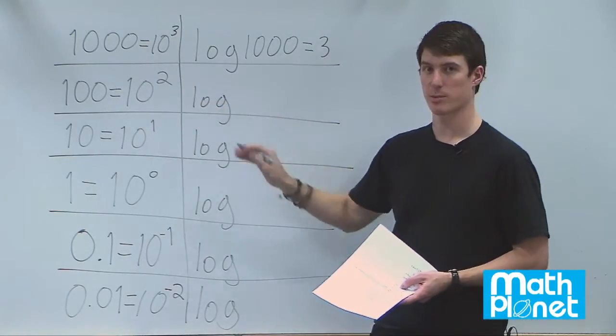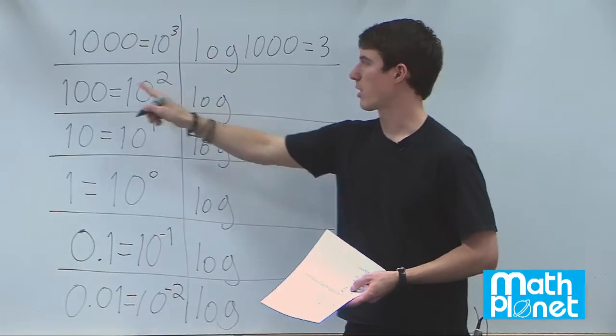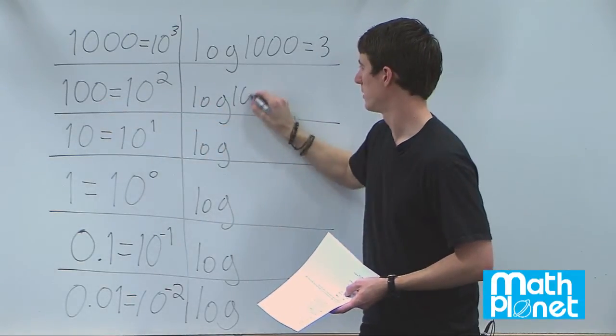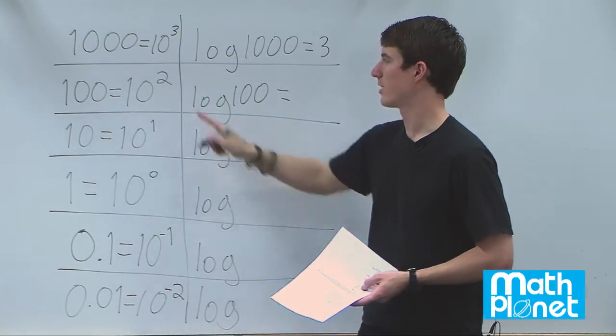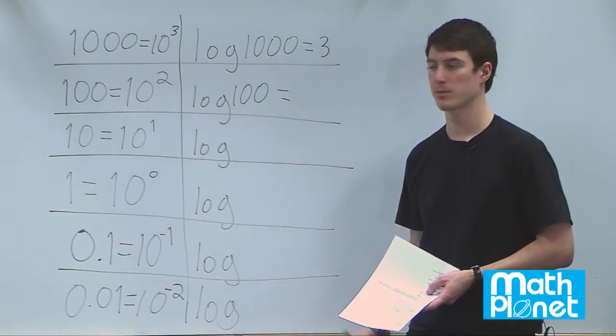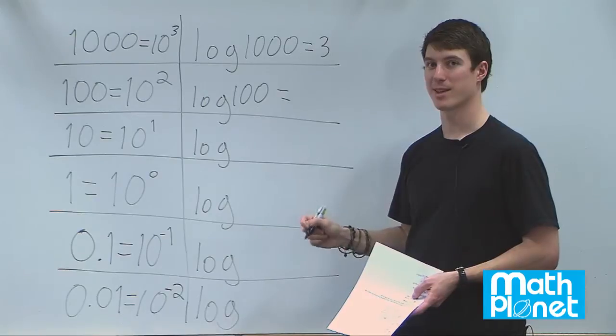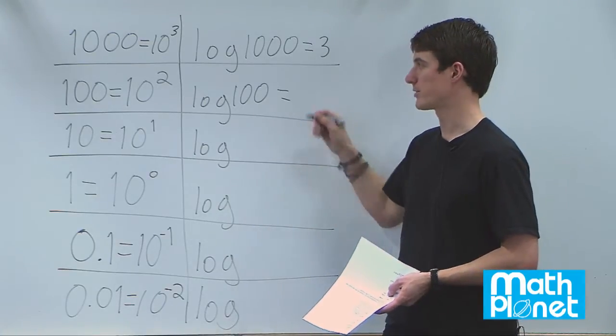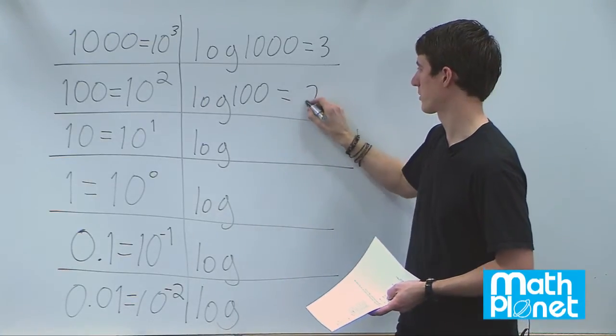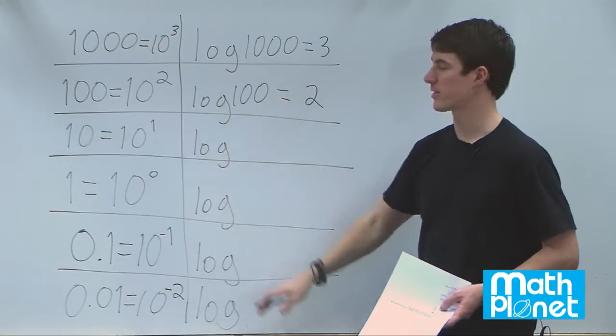So let's do the exact same thing here. So if we take the log of 100, we can write that as log of 10 to the power of 2. Bring the 2 down in front using that logarithm trick. Log of base 10 of 10 is just 1 again so this is just 2. And so this is going to be the same all the way down.